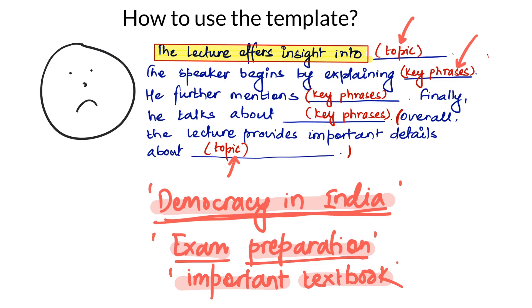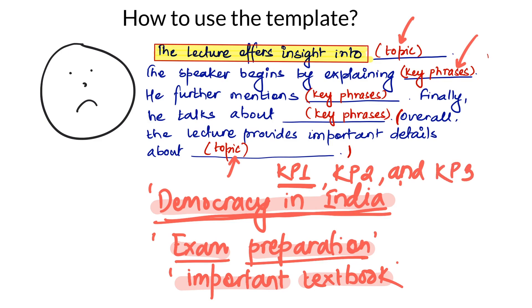Just like this, collect as many key phrases as you can and make sure that you have at least nine to ten key phrases — if you have more, that's fine. Once you have collected all the key phrases, start putting them in the gaps one by one. In the first gap use two to three key phrases, then in the second gap two to three key phrases, and in the third gap again two to three key phrases. For example: 'the speaker begins by explaining democracy in India, exam preparation, and important textbook.'